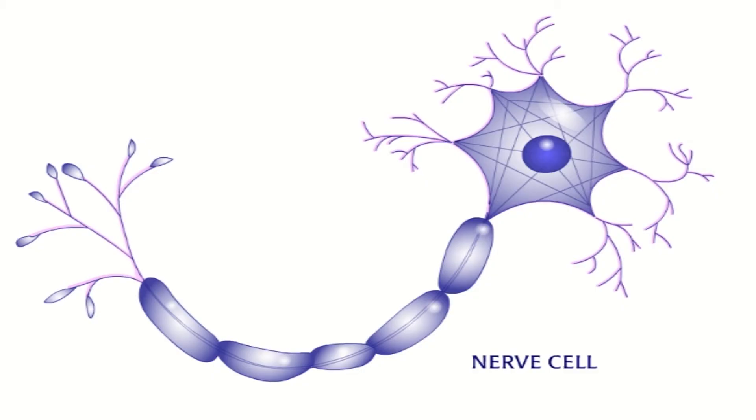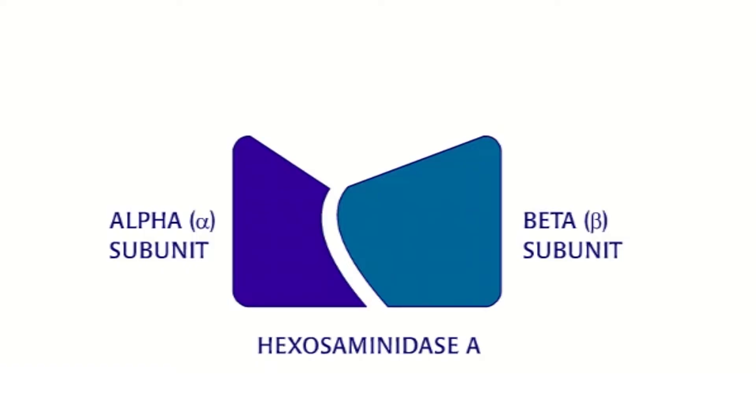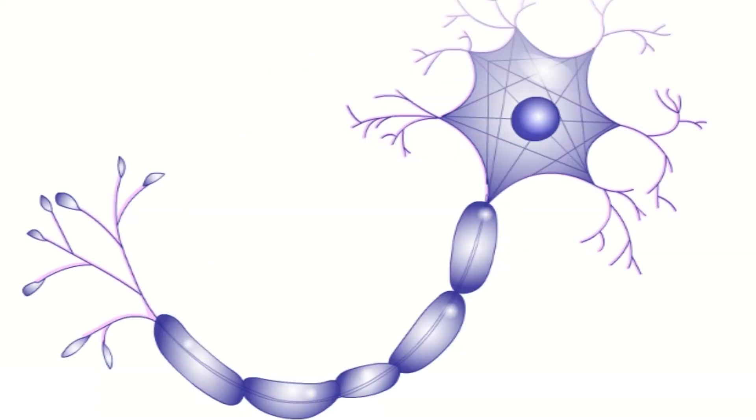All problems associated with Tay-Sachs are caused by the malfunctioning of a protein called hexosaminidase A, or hex A. The protein has two parts, alpha and beta subunits. There is also an activator subunit which can bind to alpha and beta subunits.